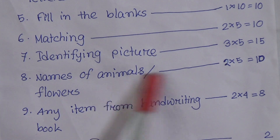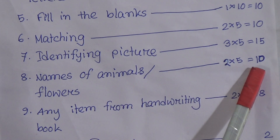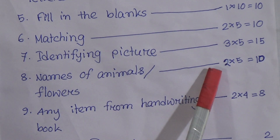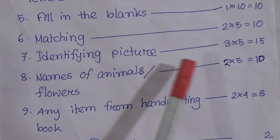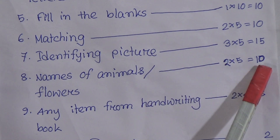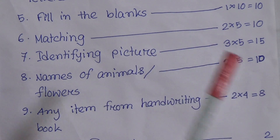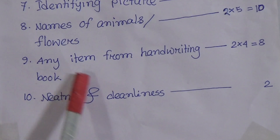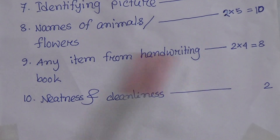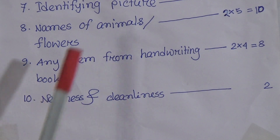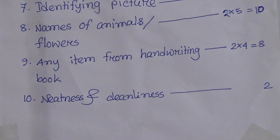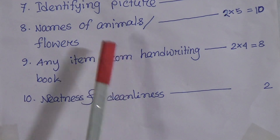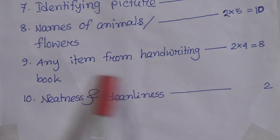Names of animals or flowers — any one. You will get either animals or flowers names. The total mark is 10, meaning each name contains two marks, so five animal or flower names for 10 marks.